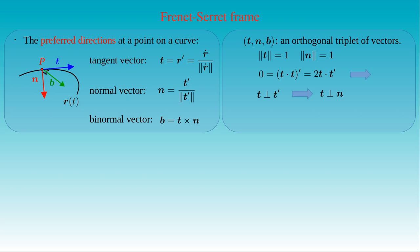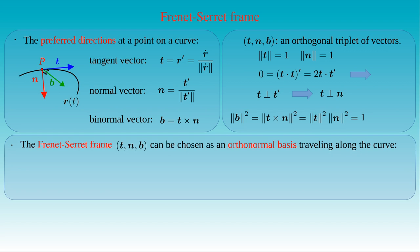We can compute the length of the binormal vector by applying its definition. Since B is the cross product of T and N, which are perpendicular to each other, the square of the length of B equals the length of T squared times the length of N squared. Since T and N have unit length, B is also a unit vector. Then the Frenet-Serret frame T, N, B forms an orthonormal basis traveling along the curve. We can introduce the notation e_i for this basis, with i running through T, N, and B. The orthogonality condition is formulated as the dot product of e_i and e_j equals the Kronecker delta with indices i and j.